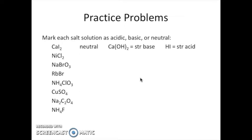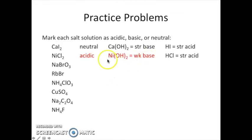Looking at the next one — nickel chloride — the parent acid making the anion is HCl, a strong acid. The parent base is nickel hydroxide, which is actually a weak base; it's not on our list of strong bases. So we have a weak base and a strong acid. You can think of it as the strong acid wins — when a strong acid and a weak base combine, the solution is going to end up being acidic. Anything that's weak requires us to think about it differently.